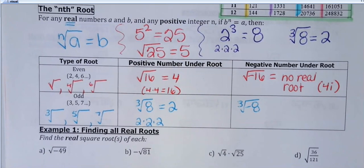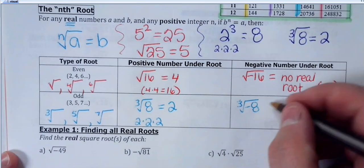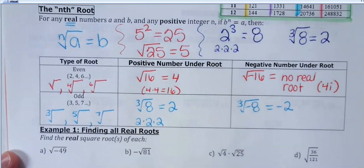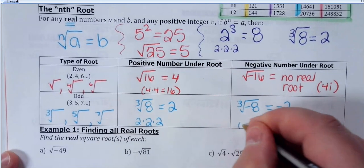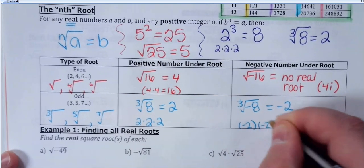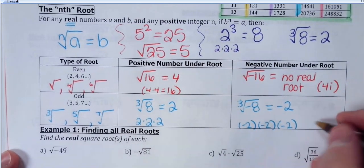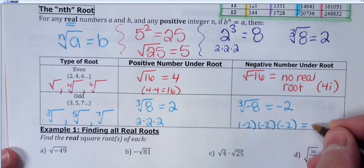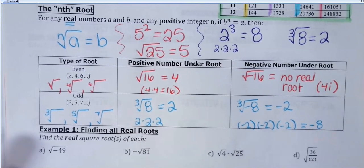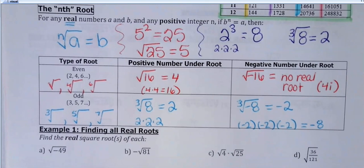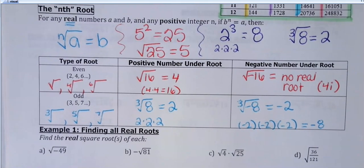It's negative 2. So if you do an odd root of a negative number, the answer is negative. If I do negative 2 times negative 2, that makes positive 4. But then when I introduce that third factor — because I'm doing a third root — that gets me back to a negative, because I have an odd number of negatives. That would be equal to negative 8. So negative 2 times negative 2 is positive 4, and then times another negative 2 turns that back into a negative answer. You can take an odd root of a negative number.